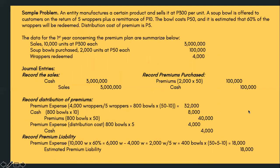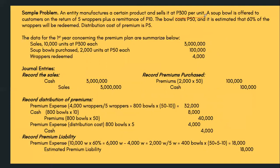Sample problem: an entity manufactures a product that sells at 300 pesos per unit. A soup bowl is offered to customers on the return of five wrappers plus a remittance of ten pesos. So one bowl equals five wrappers plus ten pesos. The bowl costs 50 pesos, it is estimated that 60% of the wrappers will be redeemed, and there is a distribution cost of five pesos per premium.